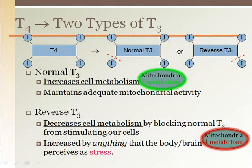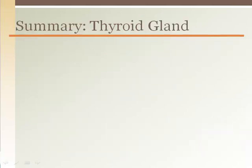Reverse T3 is formed when the wrong iodine is removed. This is an important finding because it explains what is going on in patients that have hypothyroid symptoms but have lab work indicating normal amounts of T3 and T4. Only recently have laboratories been able to test specifically for normal T3 and for reverse T3.